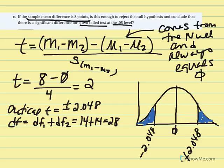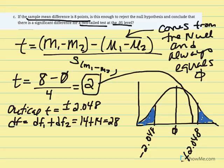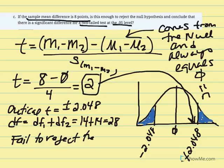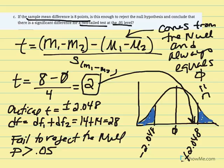Our t was equal to 2, which falls just shy of the critical region. It's not significant enough — the difference of 8 points isn't large enough to conclude it was due to treatment. So we fail to reject the null. The probability of obtaining a t statistic equal to 2 given the mean difference is greater than our alpha, indicating the t was not large enough to fall in the critical region.